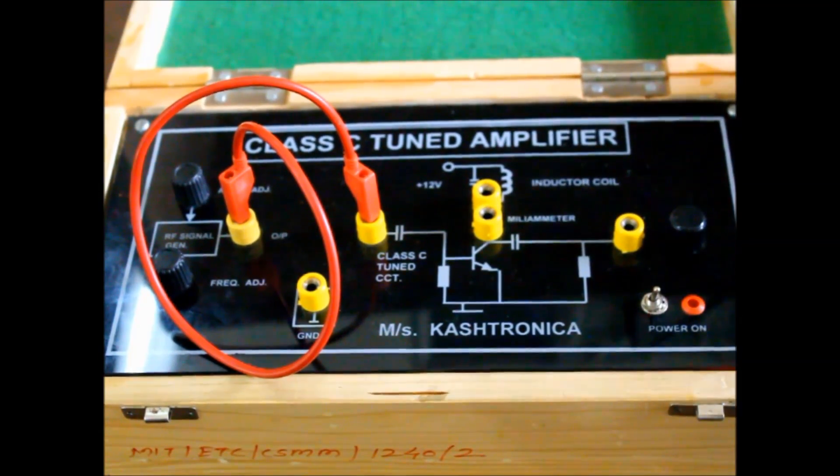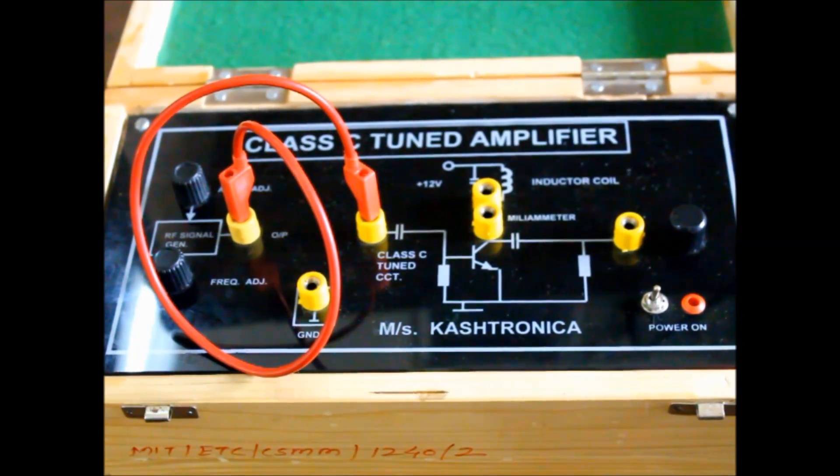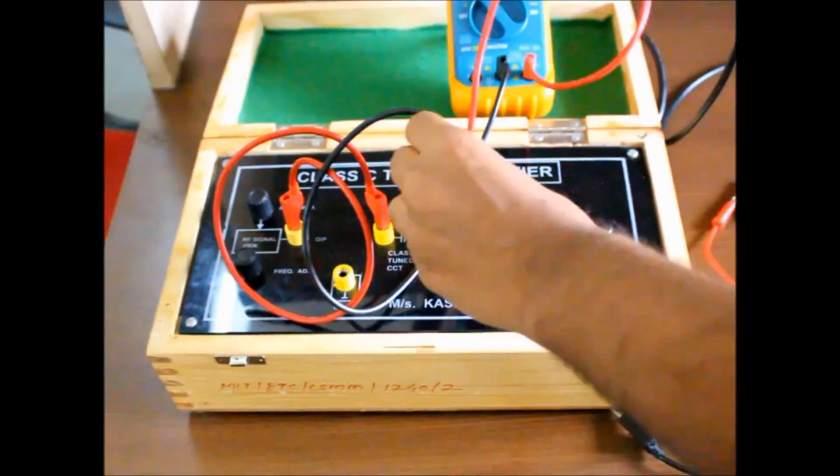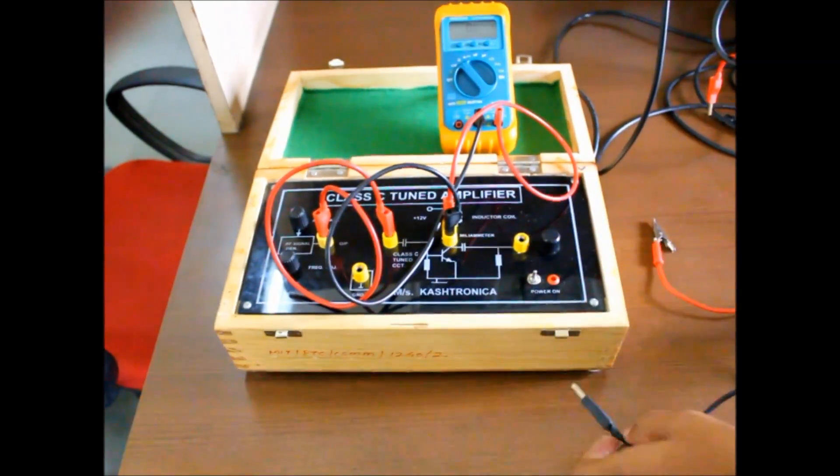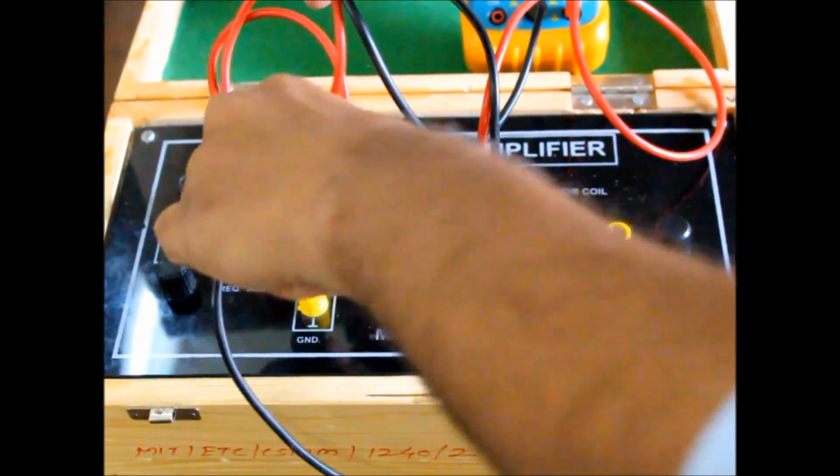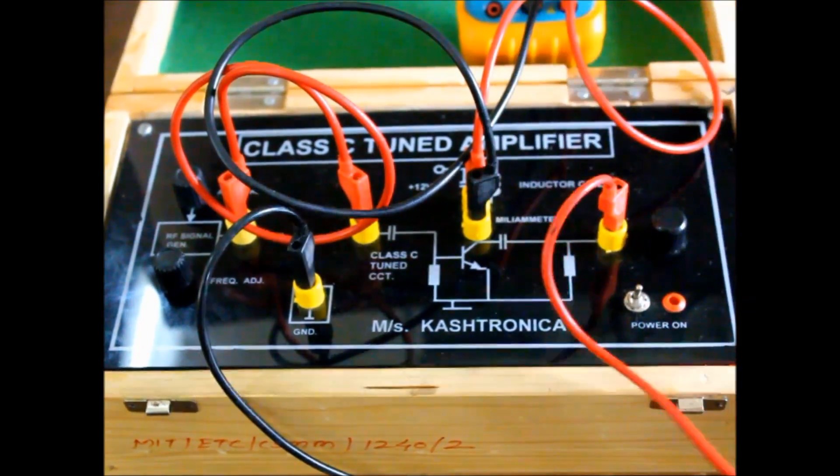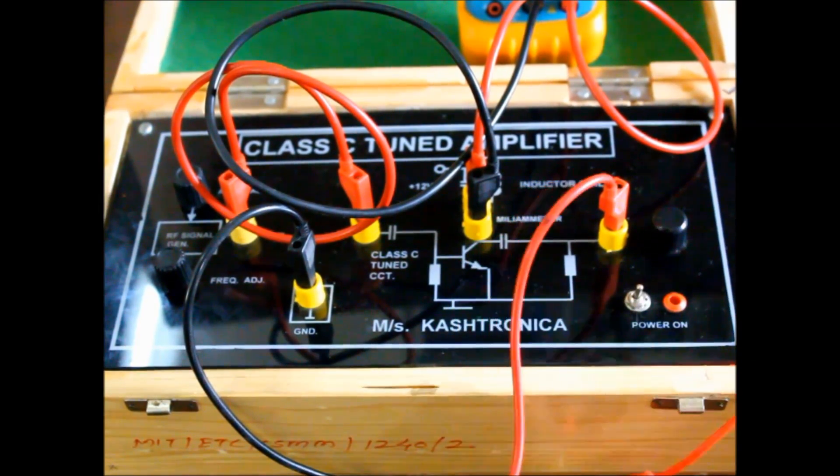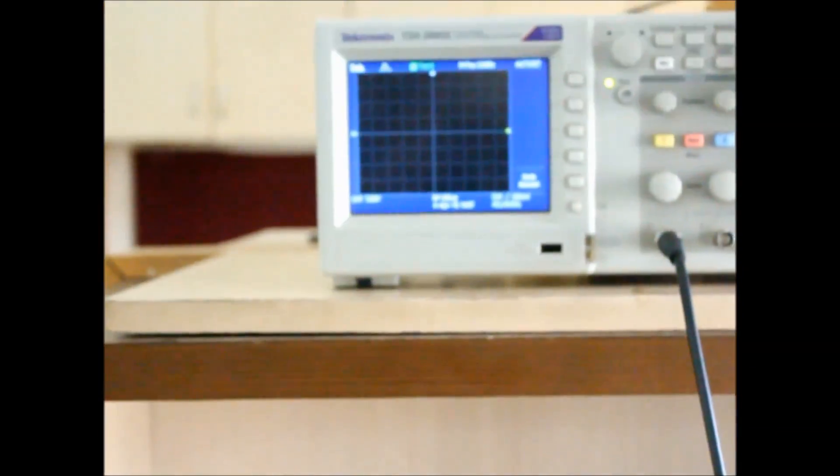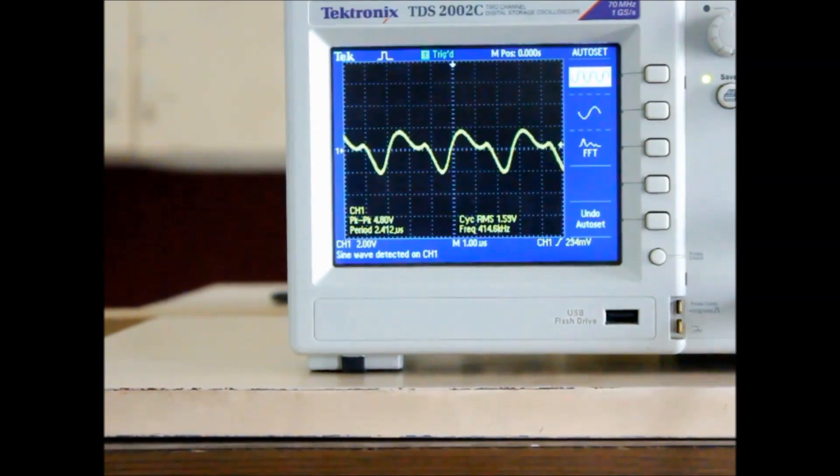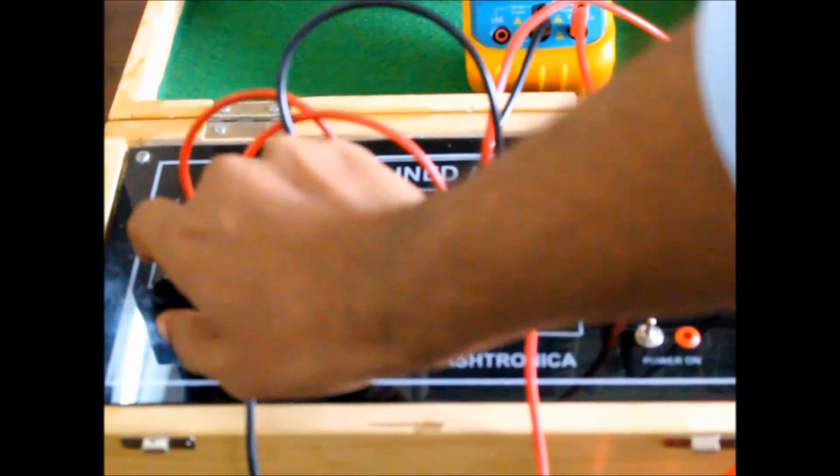So using DMM like this, now take the output on DSO. As we can see, there is a sine wave, but as we vary the frequency, the wave changes. So at certain frequencies, this maximum amplitude—that is called tuned frequency.